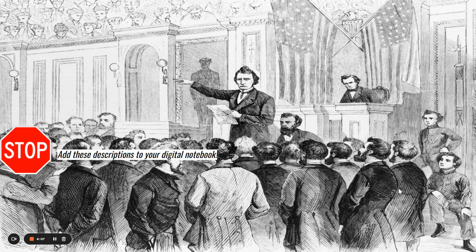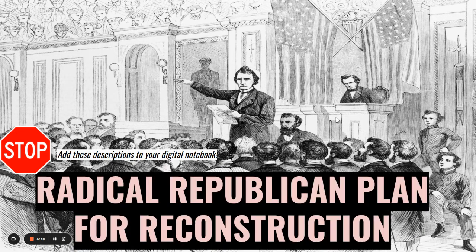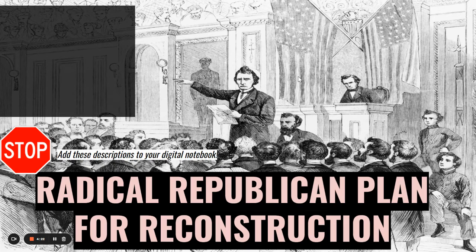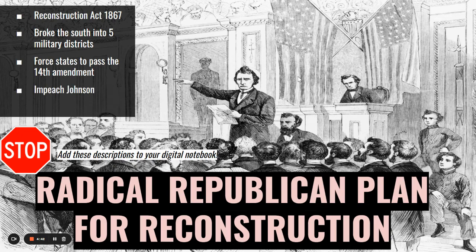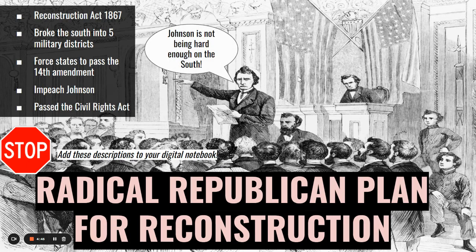Neither Lincoln's plan nor Johnson's plan actually went into effect because of the Radical Republicans. The Republicans in Congress felt that Lincoln and Johnson were both being way too generous to the South. They came up with their own plan and passed the Reconstruction Act of 1867, which broke the South up into five military districts. They absolutely forced the states to pass not only the 13th Amendment but the 14th Amendment as well — not only freeing the slaves but also granting them citizenship.